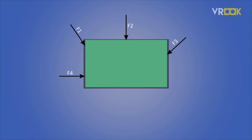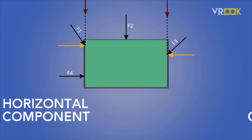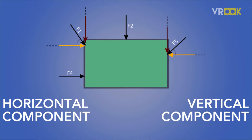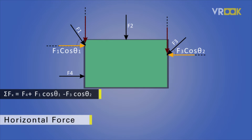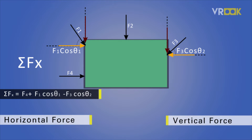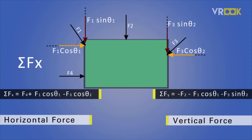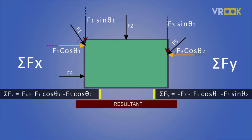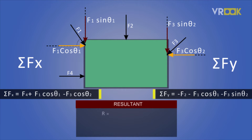In a 2D plane, we can resolve any force into two components: a horizontal and a vertical component. We add up all the horizontal forces acting on the body — this is the summation of horizontal forces, or Sigma Fx. Similarly, we add up all the vertical forces, giving us the summation of vertical forces, or Sigma Fy.